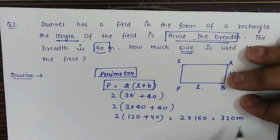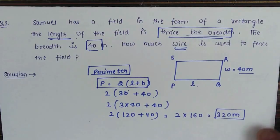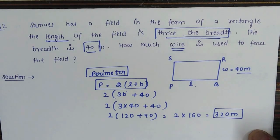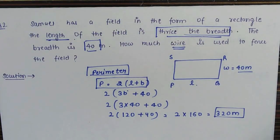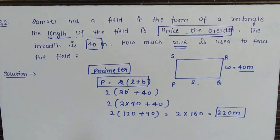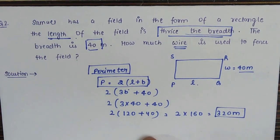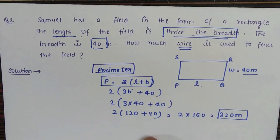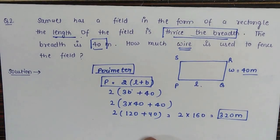This gives us 320 meters. So 320 meters of wire is needed for fencing the entire field. In this question there can be another extension: if the cost of wire is also given, then you would calculate the total cost, but that's for some other day.